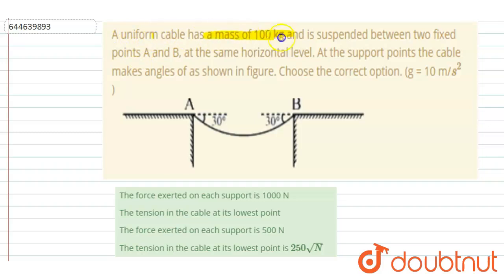a mass of 100 kg and is suspended between two points A and B at the same horizontal level. At the support point, the cable makes an angle—you can see in the figure—30 and 30 degrees. Choose the correct option.